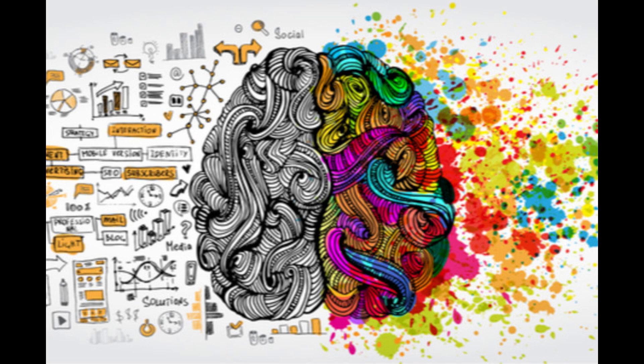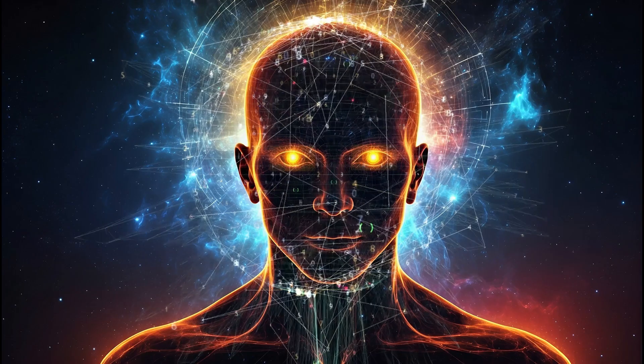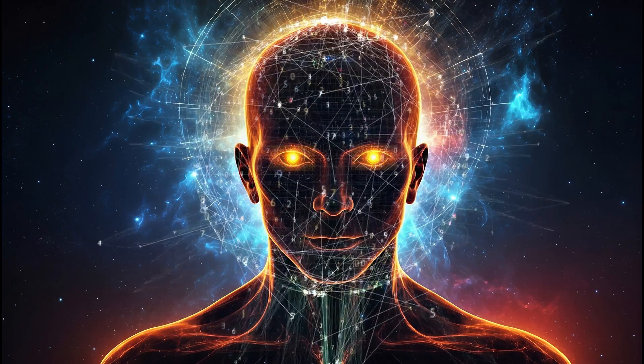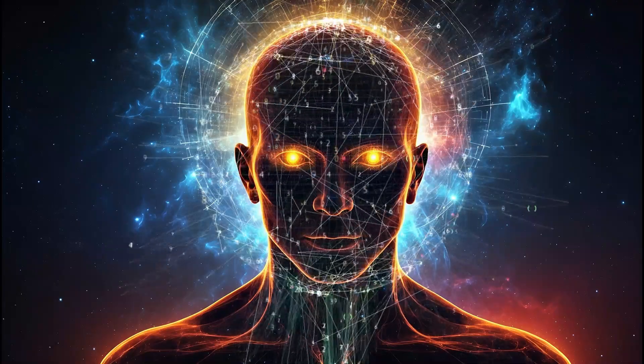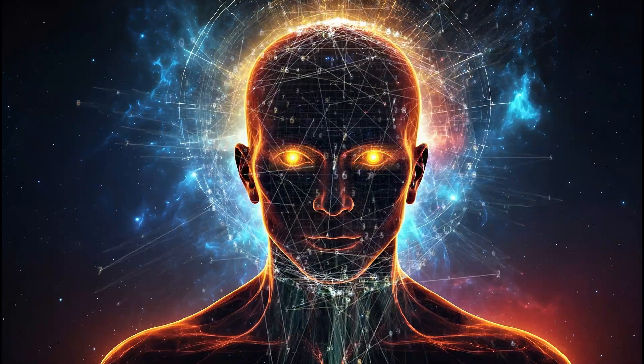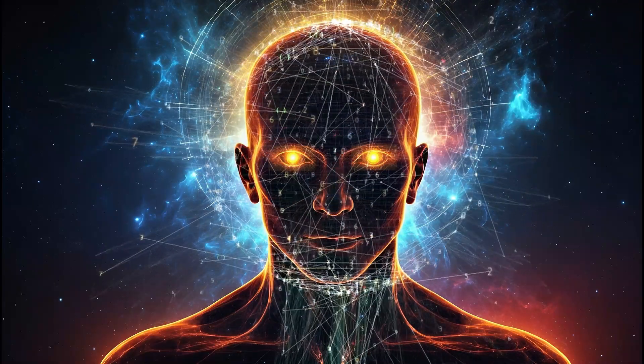Speech production: Broca's area, located in the left frontal lobe, is involved in speech production. Emotional regulation: involved in controlling emotions, impulse control, and social behavior.